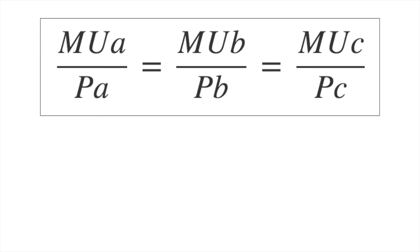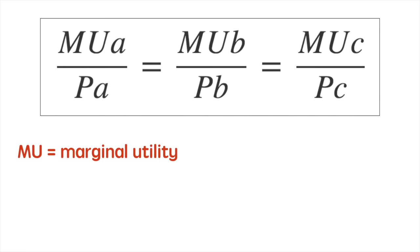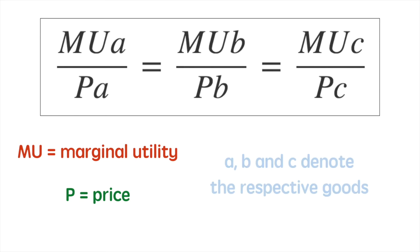The equimarginal principle states that consumer utility is maximized where the marginal utility per dollar, or other unit of currency, for all goods is equal. In this equation, MU represents the marginal utility received from the consumption of a good, P represents the price of the good, and A, B, and C represent three different goods. We could continue this for as many choices as a consumer faces.